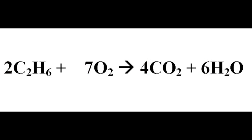It's always a good precaution to double check. We have four carbons on the left and four carbons on the right. We have 12 hydrogens on the left and 12 hydrogens on the right. We have 14 oxygens on the left and a total of 14 oxygens on the right. This means two molecules of ethane react with seven molecules of oxygen to produce four molecules of carbon dioxide and six molecules of water.